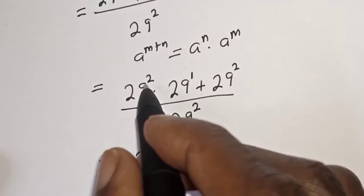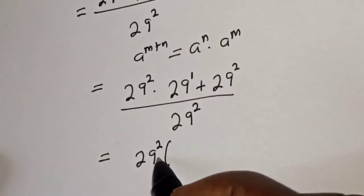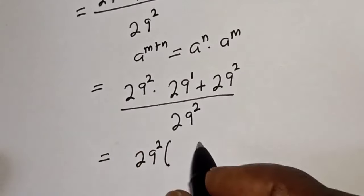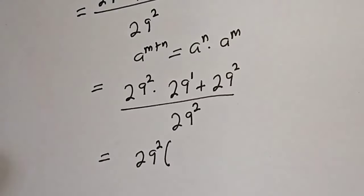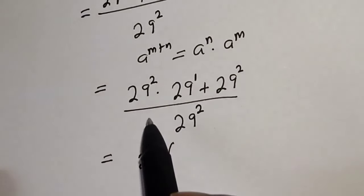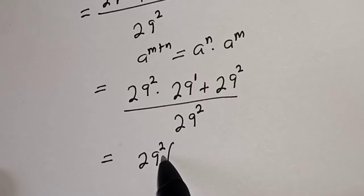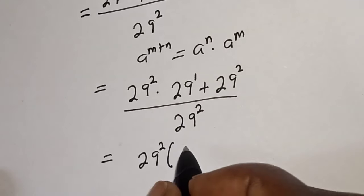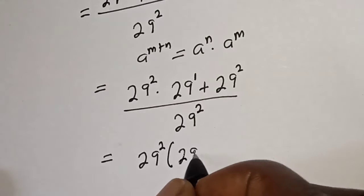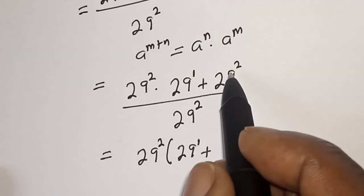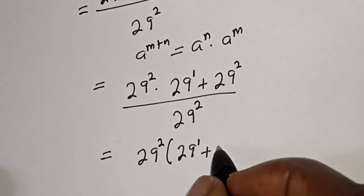times bracket: 29 squared divided by 29 squared, which is 1, times 29 raised to power 1, plus 29 squared divided by 29 squared, which is 1